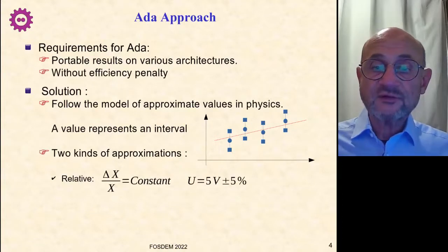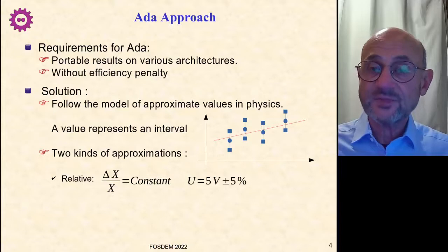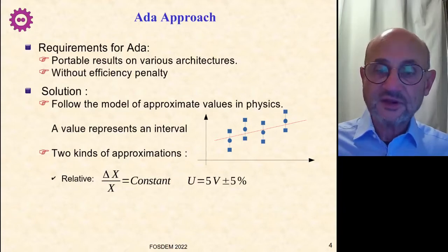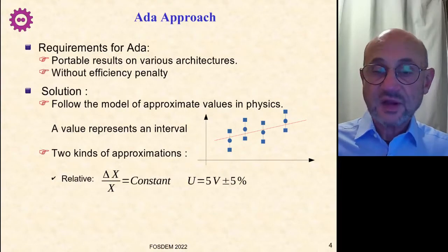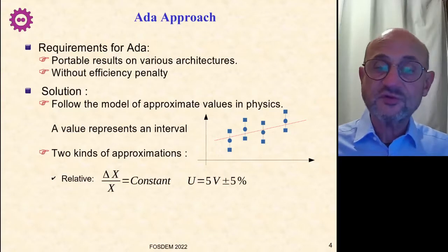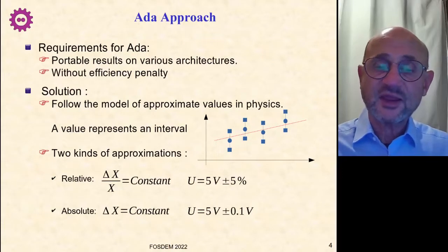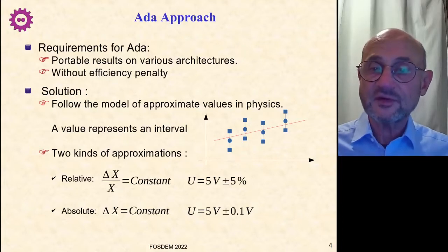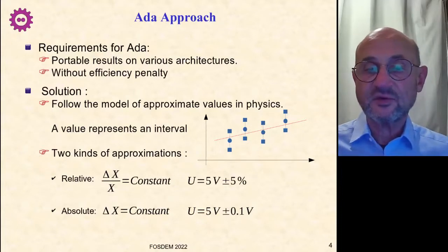There are two ways of defining those segments. What is called a relative approximation, where delta x over x is constant. We translate like something saying, okay, my voltage is 5 volts plus or minus 5 percent. So as the value grows, you have more uncertainty. Or you have absolute approximation, where delta x is constant, something like 5 volts plus or minus 0.1 volts on the whole range. The uncertainty is the same over the whole range.